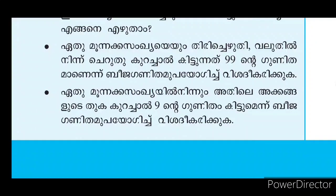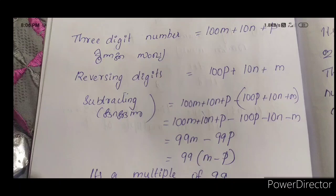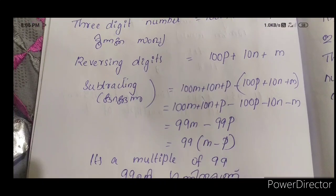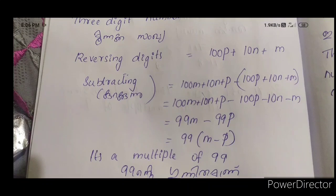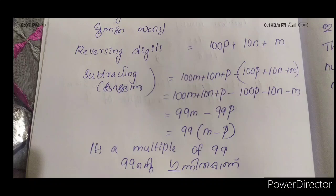The original number is 100M plus 10N plus P. The reversed number is 100P plus 10N plus M. Subtracting: (100M plus 10N plus P) minus (100P plus 10N plus M) equals 99M minus 99P, which equals 99(M minus P). This means the result is always a multiple of 99.